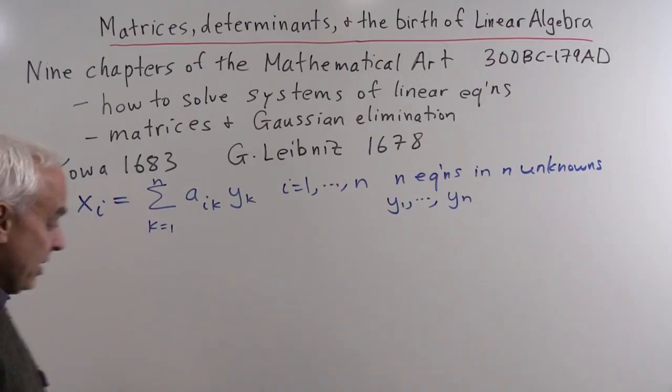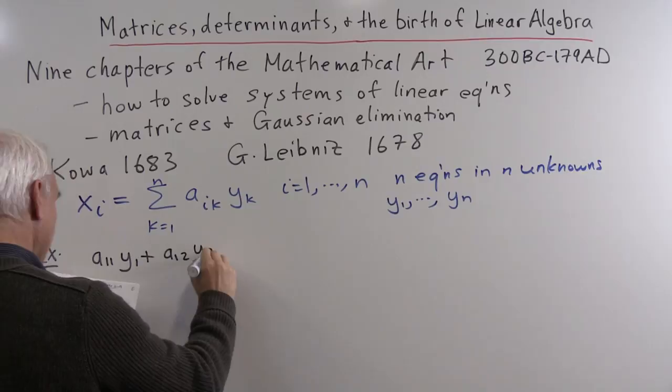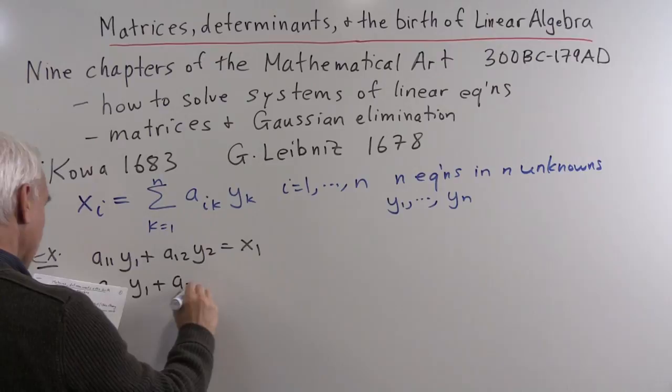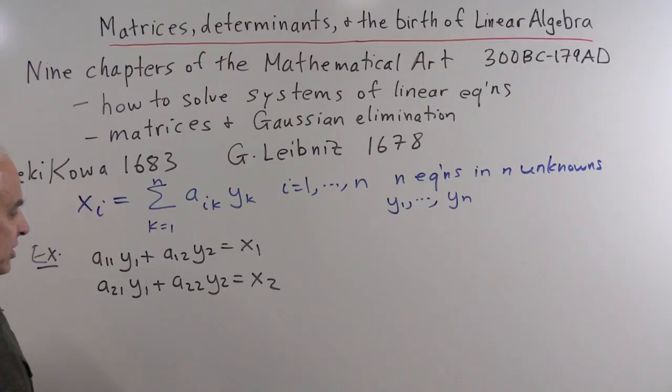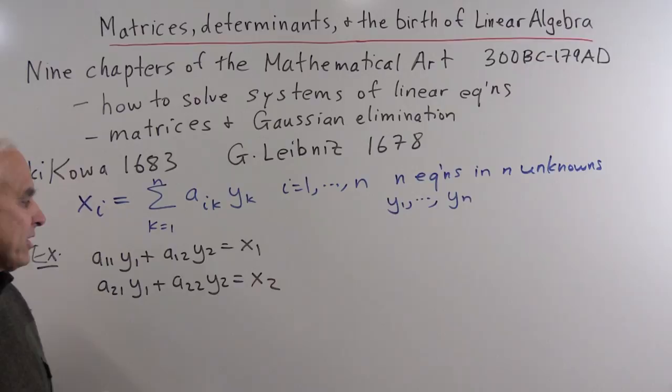For example, in two dimensions we have: A11·Y1 plus A12·Y2 equals X1, and A21·Y1 plus A22·Y2 equals X2. This is a system of two equations where the unknowns are Y1 and Y2, and the known quantities are X1 and X2. We want to understand what Y1 and Y2 are in terms of X1, X2, and the coefficients.